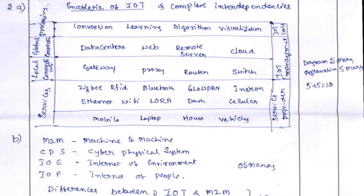The B question was: define M2M, CPS, IOE, IOP, and the differences between those three. All explanations carry 5 marks and the difference between the terminologies carries another 5 marks, totally contributing to 10 marks.